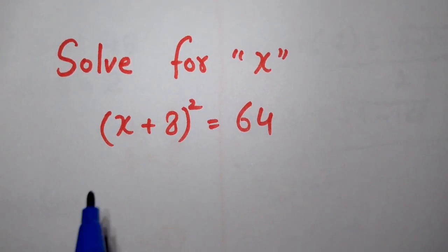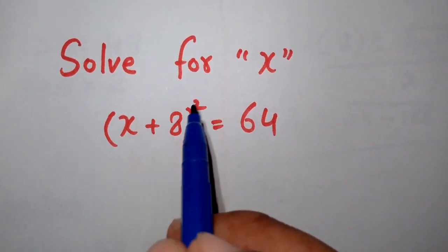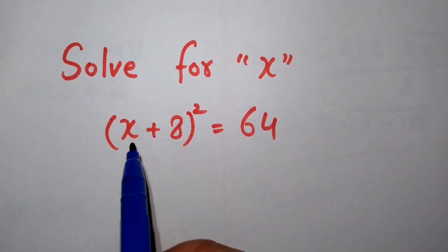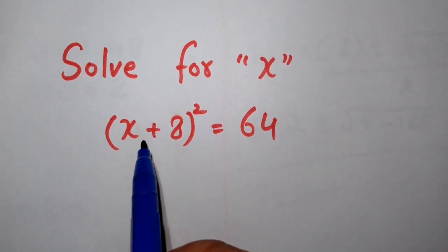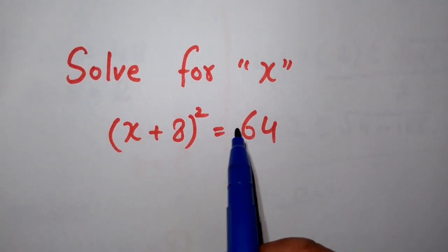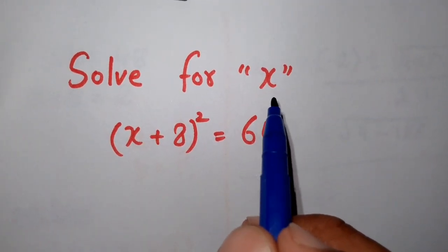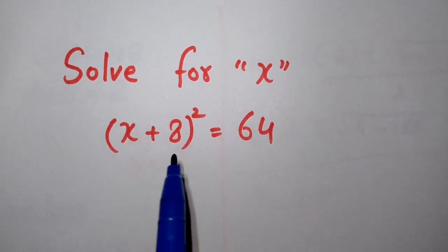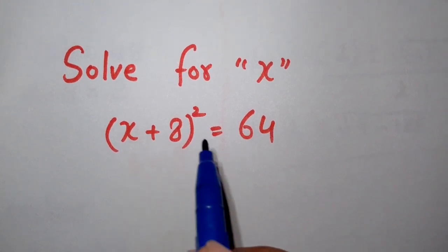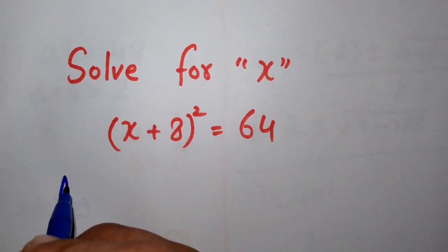Hello, welcome to the Maths Academy. We have to solve a very interesting question: (x + 8)² = 64, and we have to find the value of x. We can solve this question by two methods.